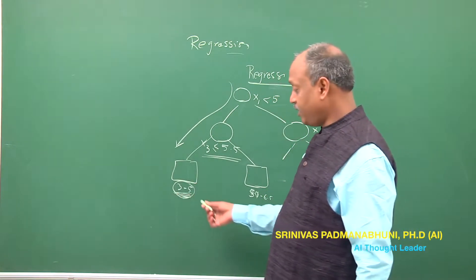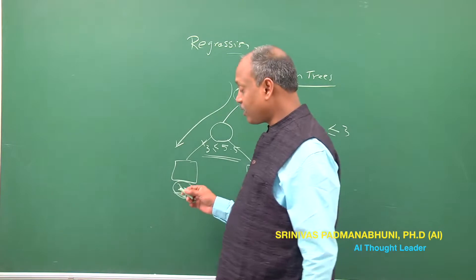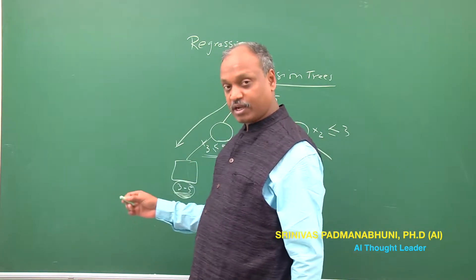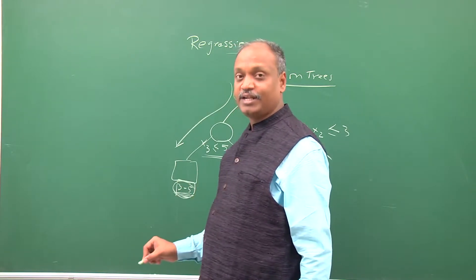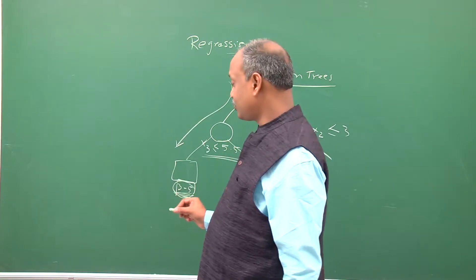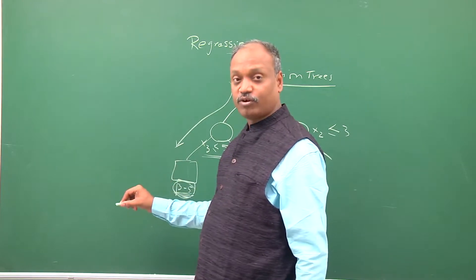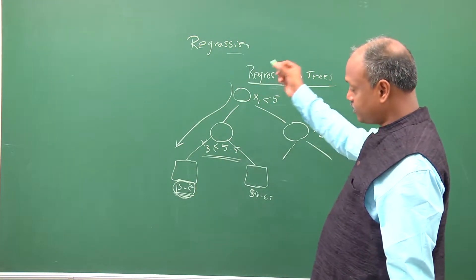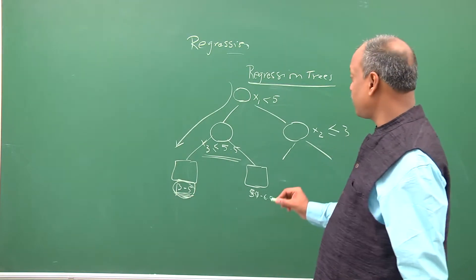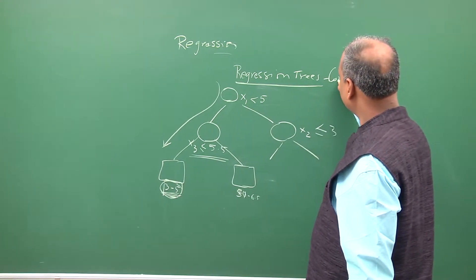If you see the major difference from the classification tree is the way we treat your output variable at the leaf node. Here the leaf node you do not work on a concept of a specific class of output, instead you work on a notion of what is called as a range of the output values which are potentially qualified for that leaf node.